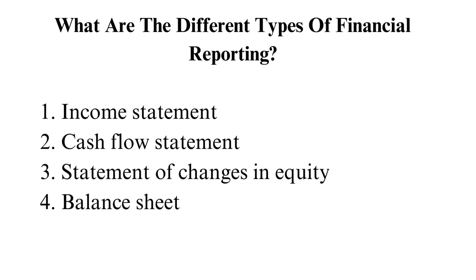1. Income statement. An income statement reports the company's bottom line, which is the revenue earned over a certain period. The top line is the gross sales, proceeds to the operating costs associated with money-making activities, followed by the gross profit, then closes with the net profit or loss.